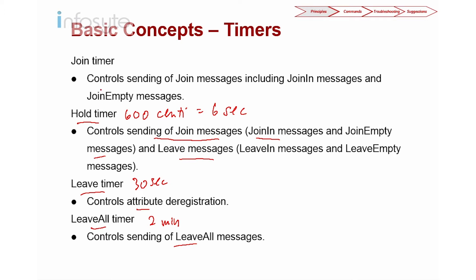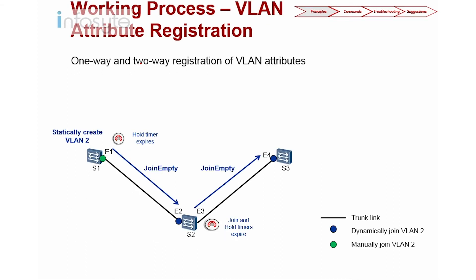Those are all the default timers. You can change the timers on the trunk port. Now let's look into the working principle of how the attributes work — specifically one-way registration and two-way registration on the VLAN attribute.